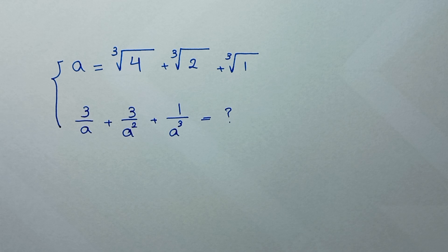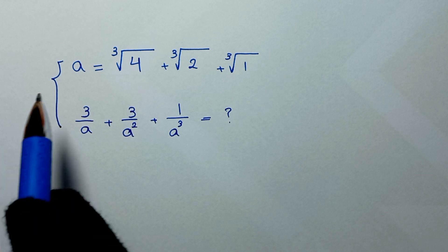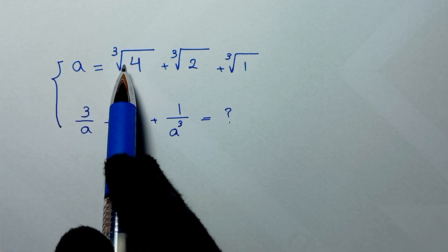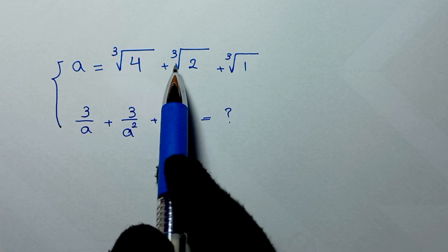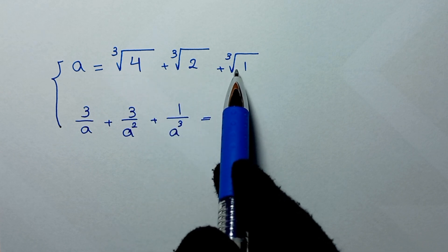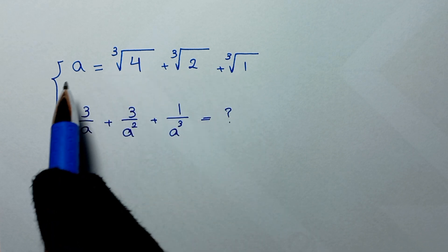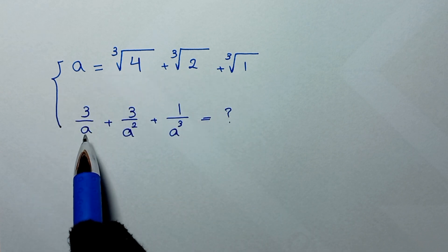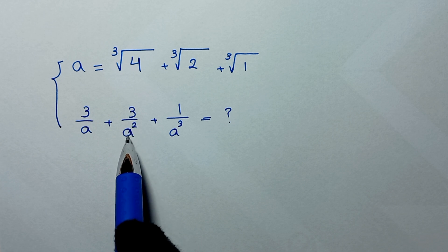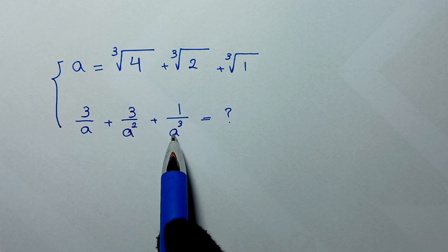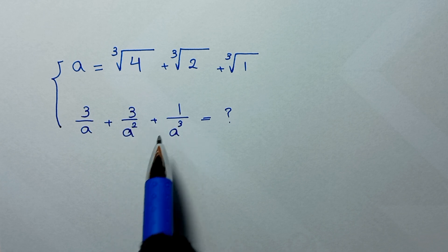Hello my friends, you're welcome to solve this math problem where a is equal to the 4th root of 4, plus the 4th root of 2, plus the 4th root of 1, and we need to find the value of 3 over a, plus 3 over a squared, plus 1 over a cubed.